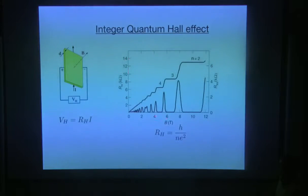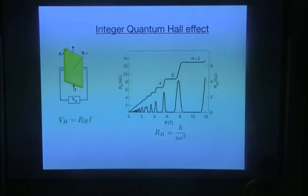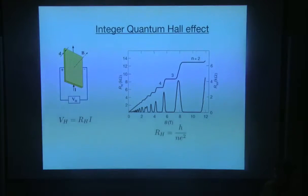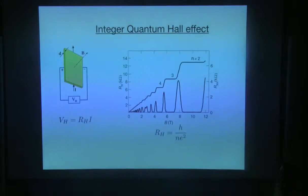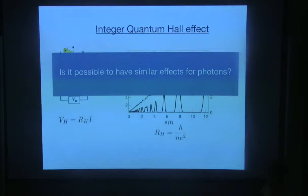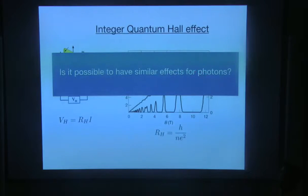These plateaus are very robust, meaning that their location depends only on some fundamental constants — Planck's constant H, e squared, and N being an integer. What was surprising for people was that these states and these plateaus are robust. So even if we change the sample, if we have extra impurity, less impurity, if the temperature fluctuates a little bit, these plateaus are robust and their location does not depend on any physical parameter other than these. That's why people have been using this as a standard for conductance. Our goal in the first part will be to see whether we can see similar effects for photons.